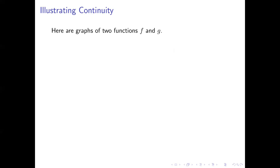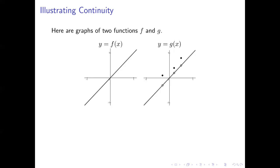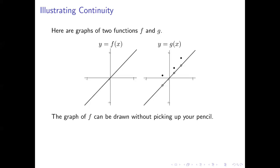Let's illustrate the idea of continuity here so we know what we're trying to do. Here are two function graphs. On the left, we have the graph of a function f, and on the right, we have the graph of a function g. Notice that you can draw the graph of f without picking up your pencil — it's just a single straight line. So we can say that f is a continuous function.